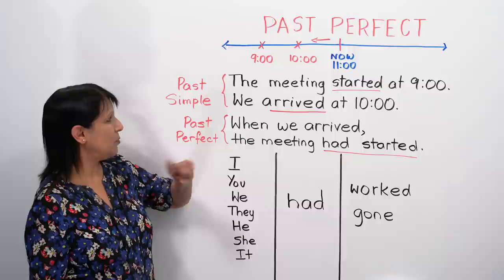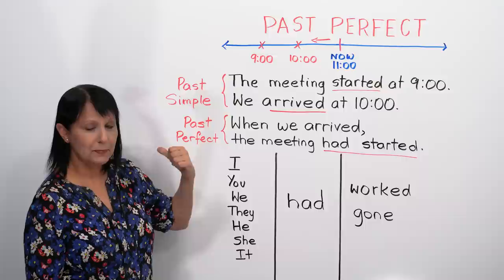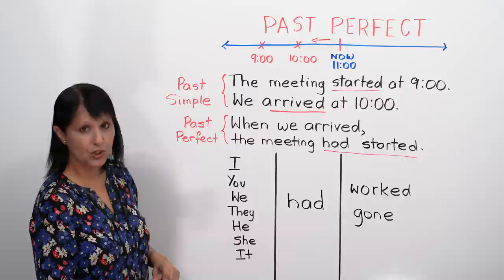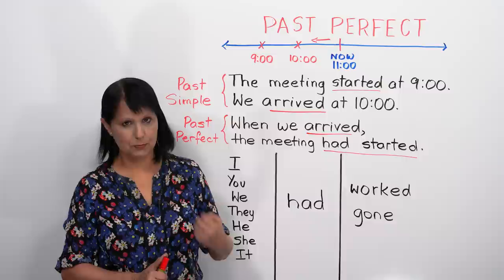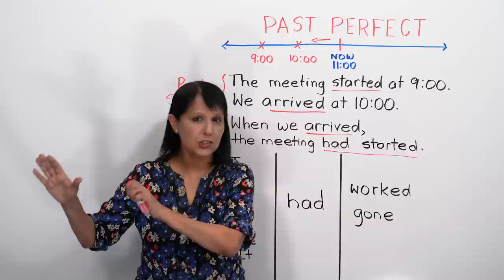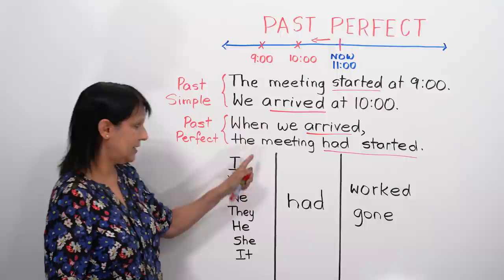In this case, what happened first — nine o'clock or ten o'clock? The meeting started at nine. That happened first. So whatever happened first, we express in the past perfect tense. The other part of the sentence can be in the past simple tense — we arrived. But when we want to show what happened first, we use the past perfect tense. We use it when we're talking about two or more things, both of which happened in the past, and we want to show which of them happened first. The one which happened first is expressed in the past perfect.